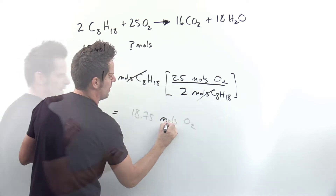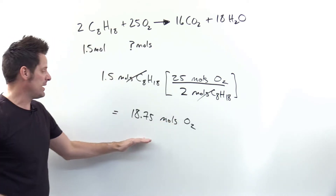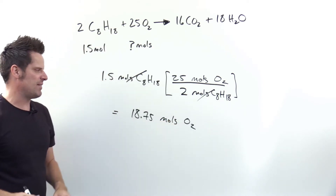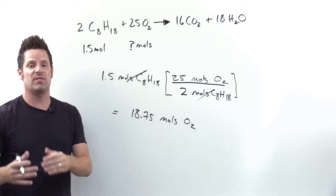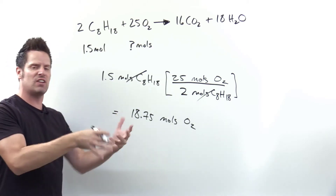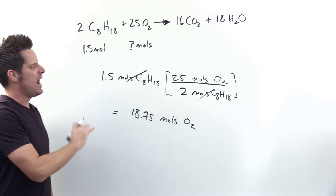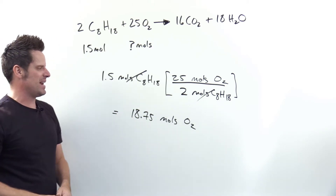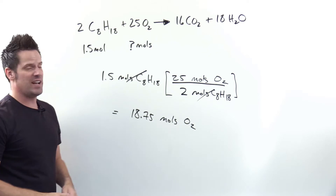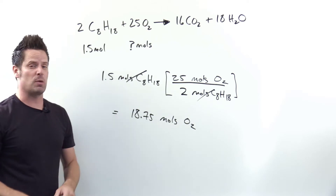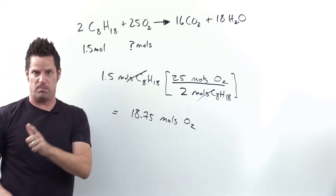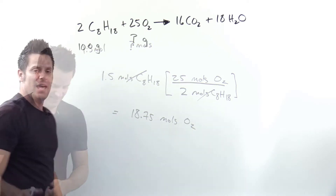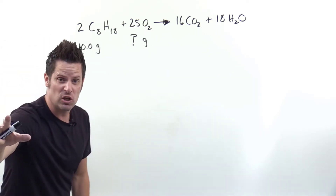Crossing out the units, I'm left with moles of O2. The final answer comes to 18.75 moles of O2. If you want to be correct, you'd round to the proper number of significant figures according to sig fig rules — I'll ignore that for now. That is the answer to Part A.